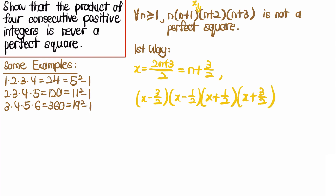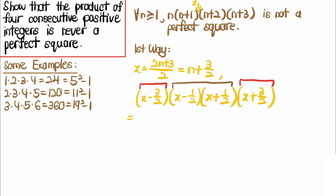This symmetry enables us to group the outer two terms and the inner two terms together, giving us (x² - 9/4)(x² - 1/4).